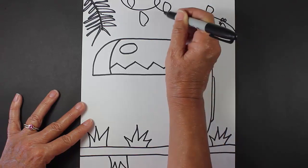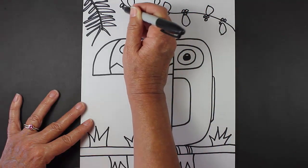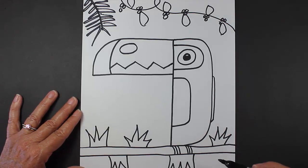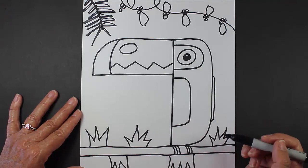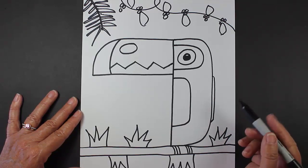I know that toucans sometimes like to eat berries, so I'm going to put some berries on this vine, and I think I'm finished. If you feel like you have some space that you'd like to fill up, go ahead and draw whatever you'd like at this point. And then after you do that, you can either color or you can paint your toucan. I hope you had fun, and I'll see you in the next lesson. Bye!